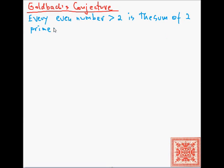We can say a sum of 2 primes, because that sum is not guaranteed to be unique. So here are a couple of examples.